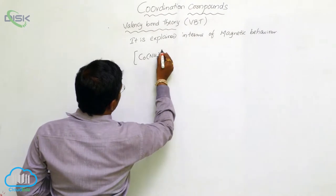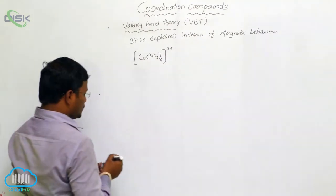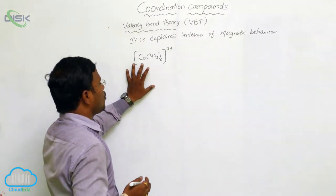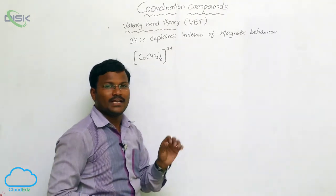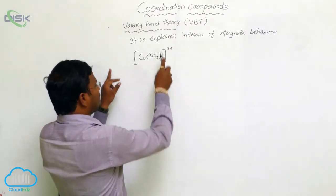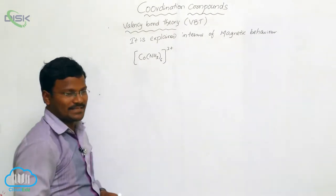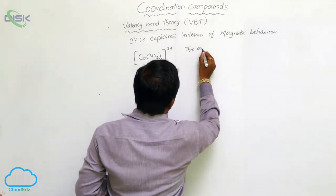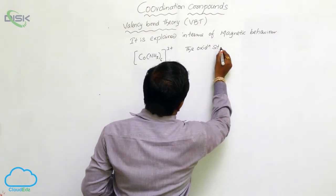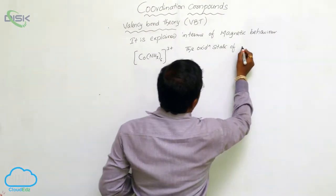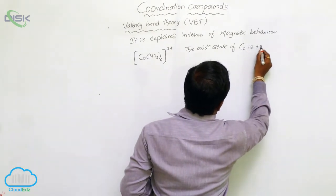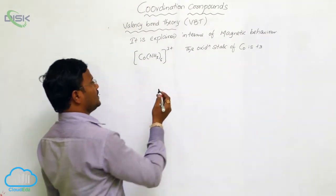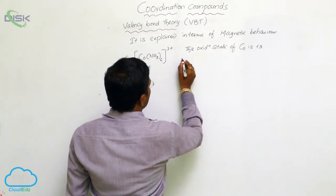The central metal atom present in this compound is cobalt, which is coordinated with six ammonia ligands. Ammonia is a neutral ligand, and the expected charge present within the coordination sphere is +3. So the oxidation state of cobalt is +3.